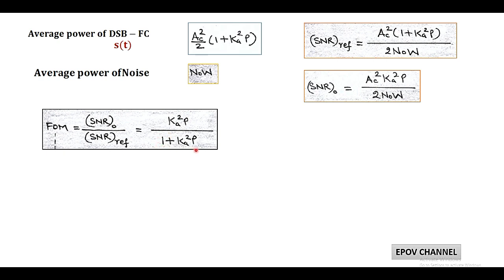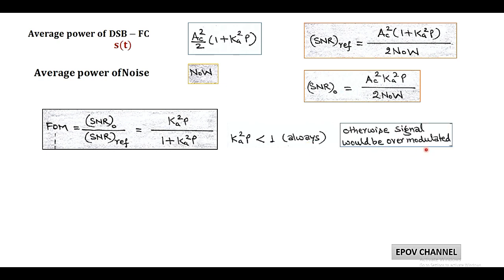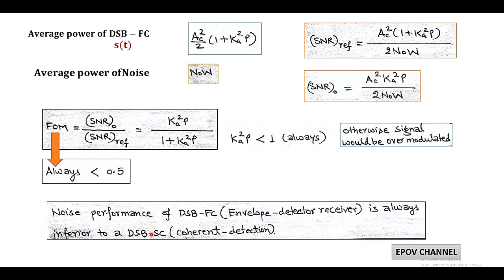We note that the value of KA²·P is always less than 1; otherwise, the signal becomes over-modulated. Under this condition, the figure of merit is always less than 1/2. That is, for double sideband full carrier with envelope detection. Since the figure of merit in double sideband suppressed carrier is unity, we can say the noise performance of the envelope detector receiver is always inferior to the coherent detector or double sideband suppressed carrier, since its figure of merit is less than half.